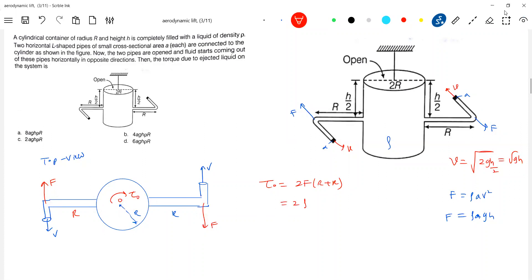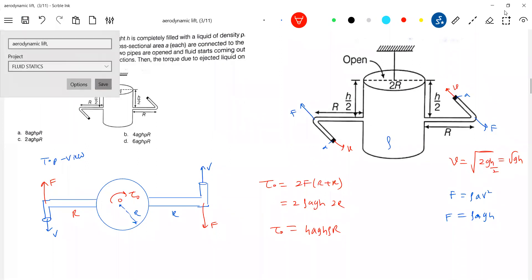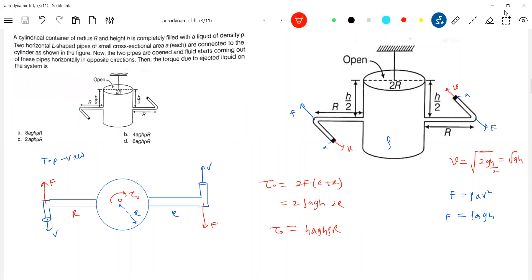What is f? Rho a gh. This will be 2r, so 4 a gh rho r. So like this, the emerging liquid will also exert a torque. Simple, simple things. So what will happen to it? It will start spinning, this one.